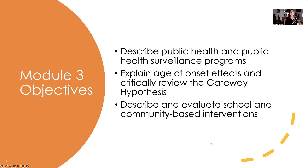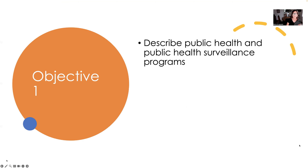Let's get into our objectives. First, describing public health and public health surveillance programs. Second, explaining the age of onset effects for substance abuse and then critically reviewing the gateway hypothesis — we'll talk a little bit about gateway drugs. And finally, describing and evaluating schools and community-based interventions to see how those are working.